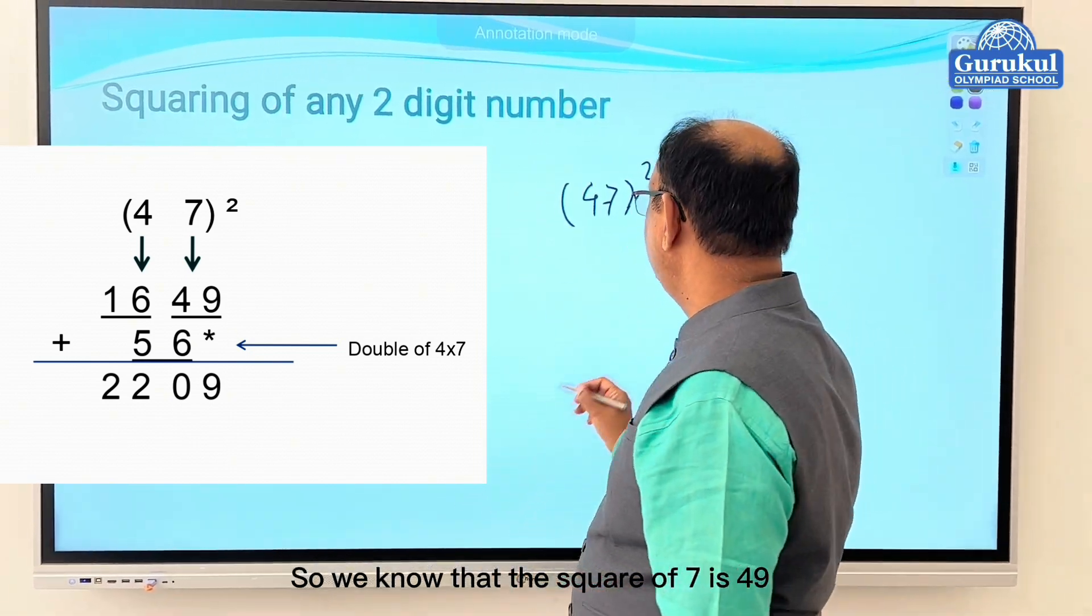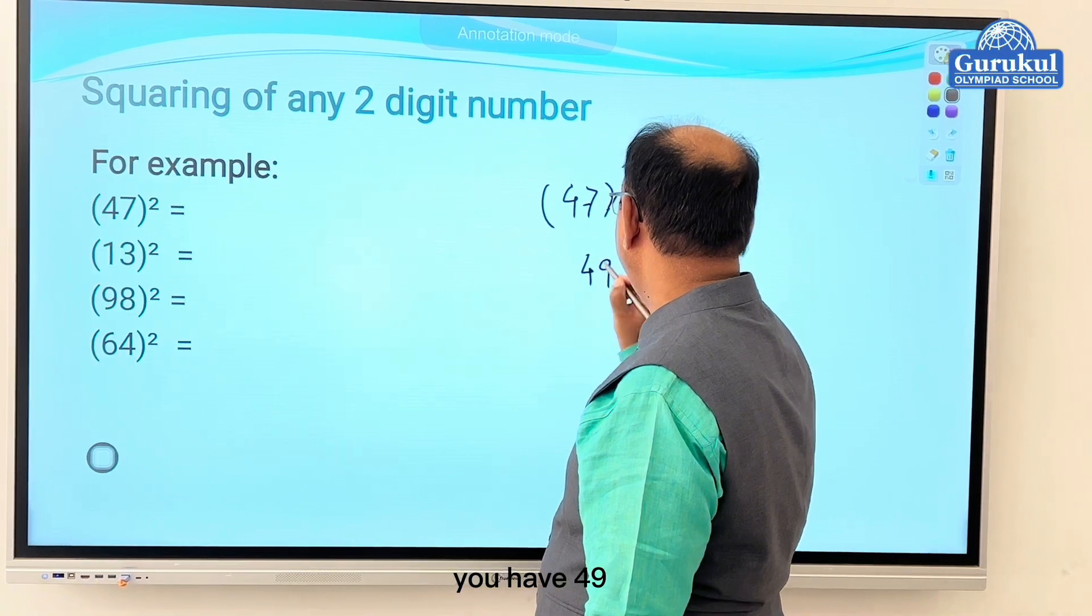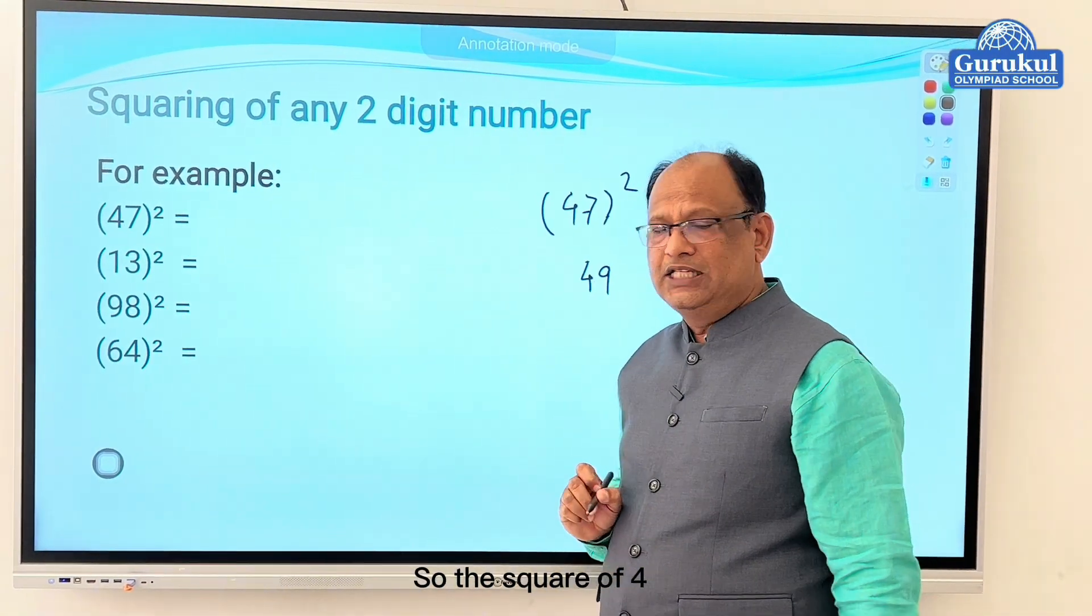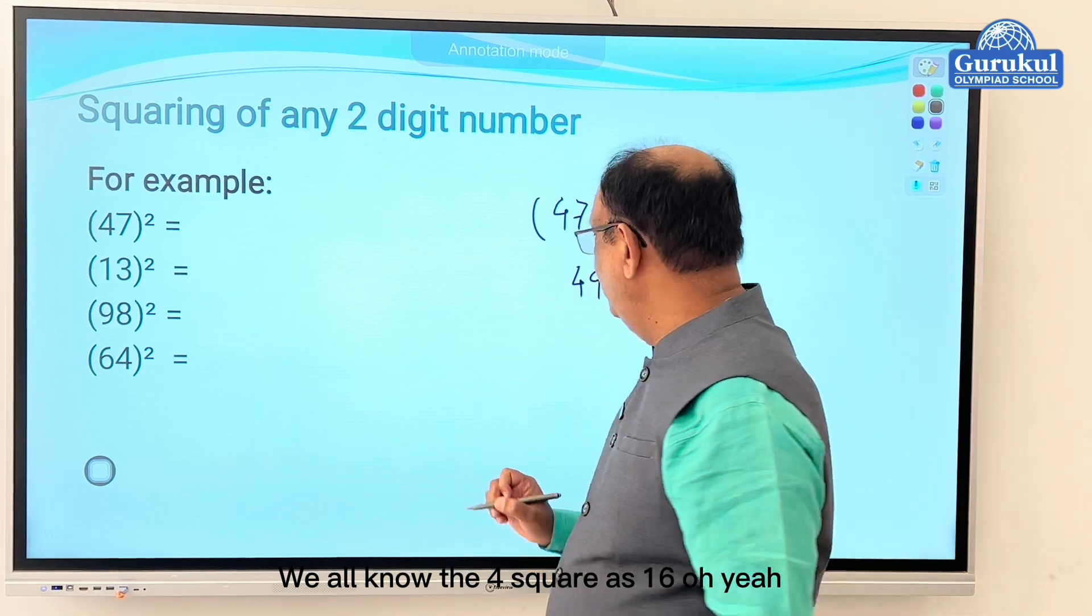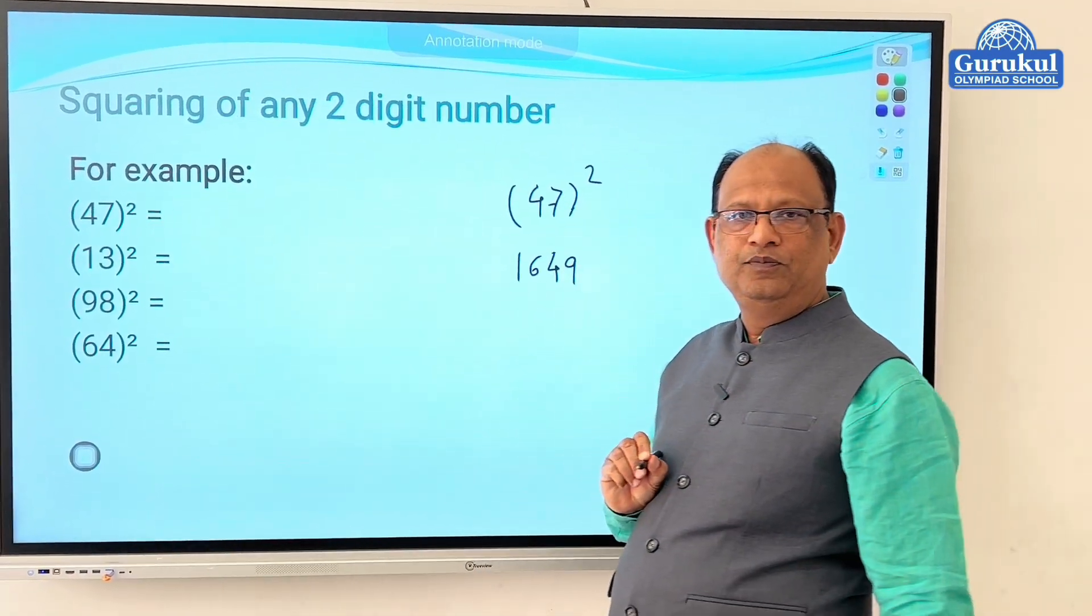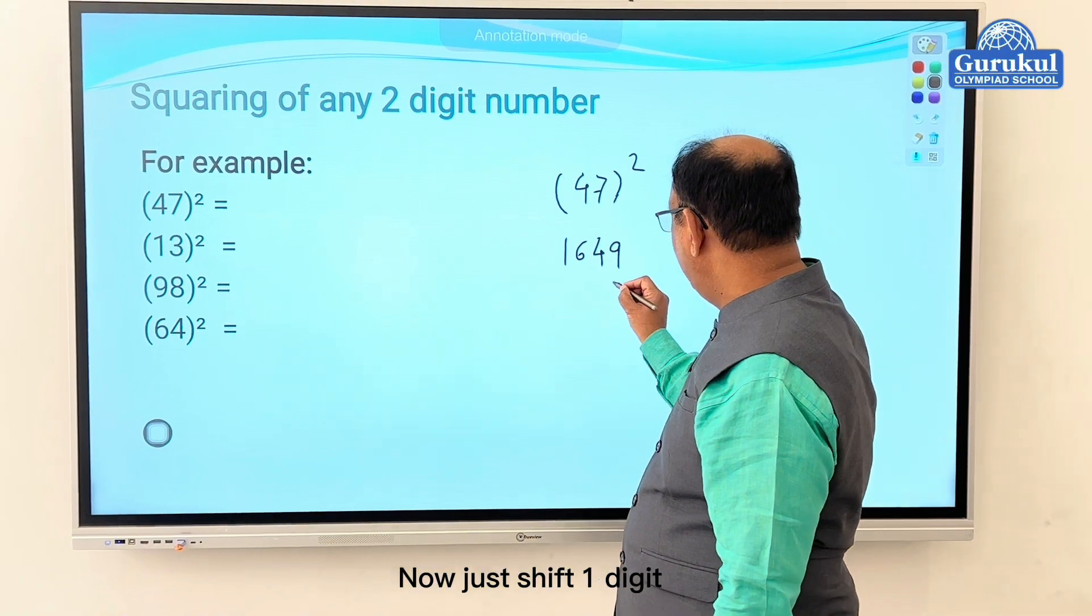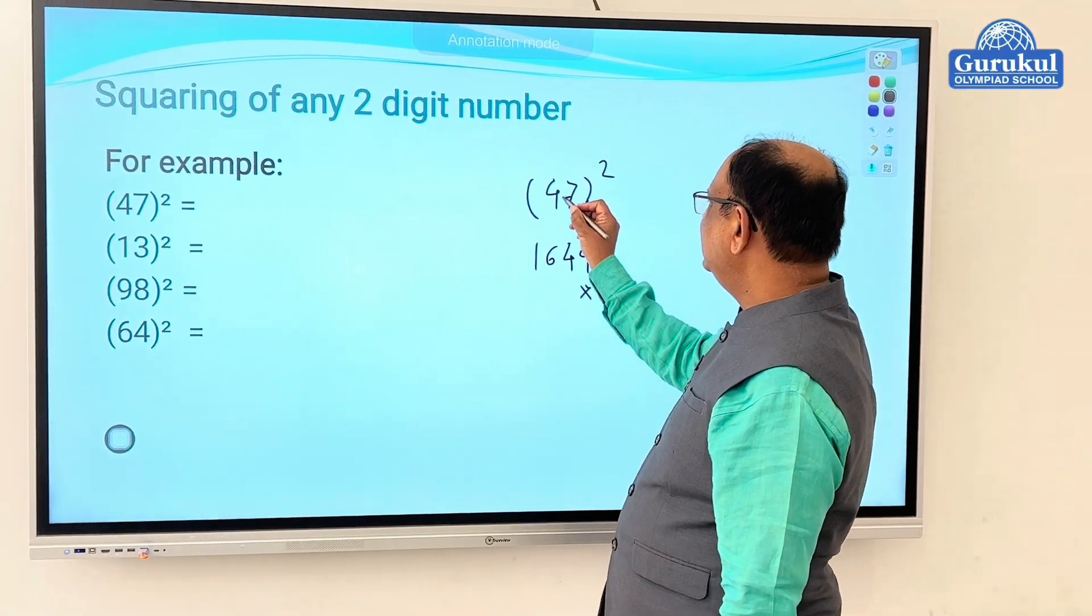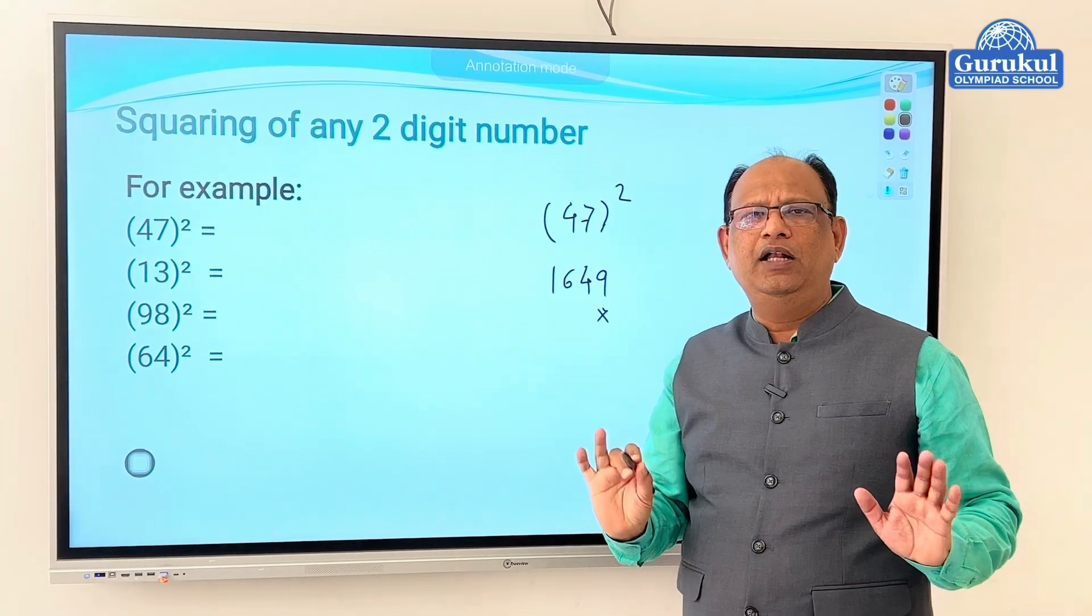Write it down: forty-seven ka square nikalna hai. This is an easy technique. The technique says you just have to write down the square of seven. We know that the square of seven is forty-nine, so write forty-nine here. Then the square of four. The square of four, we all know, is sixteen, so write sixteen here.